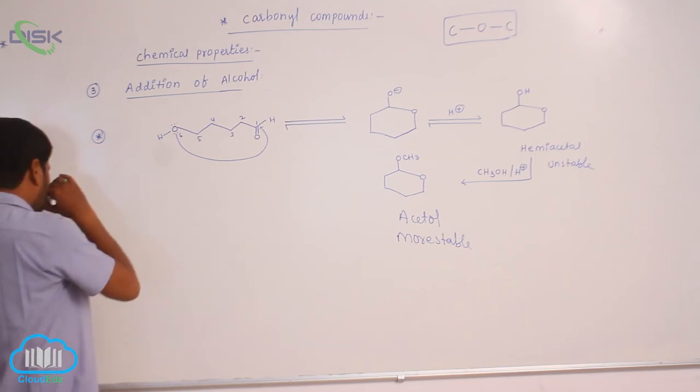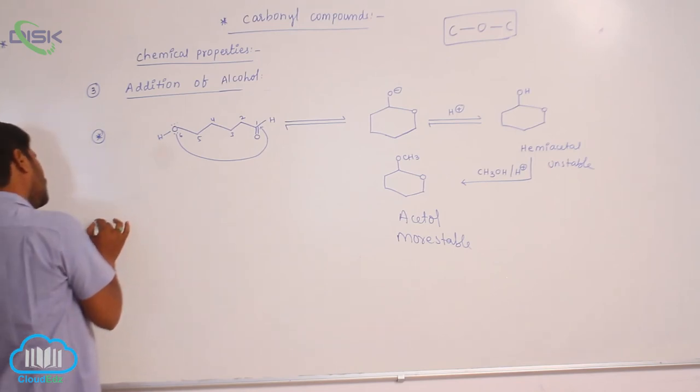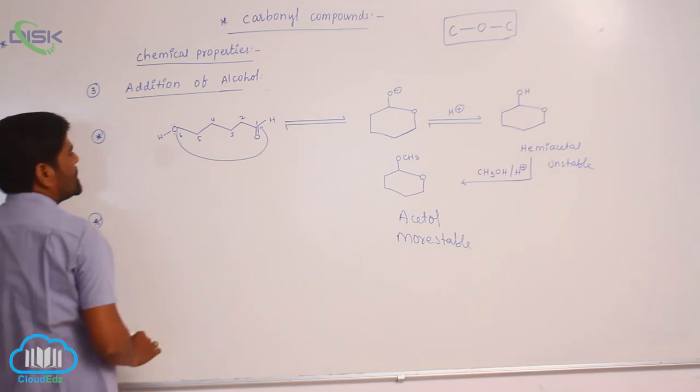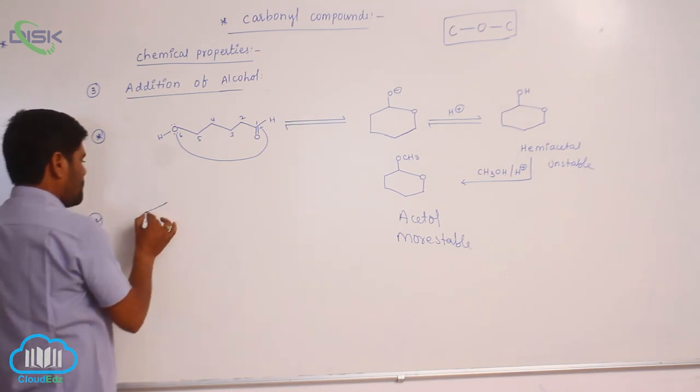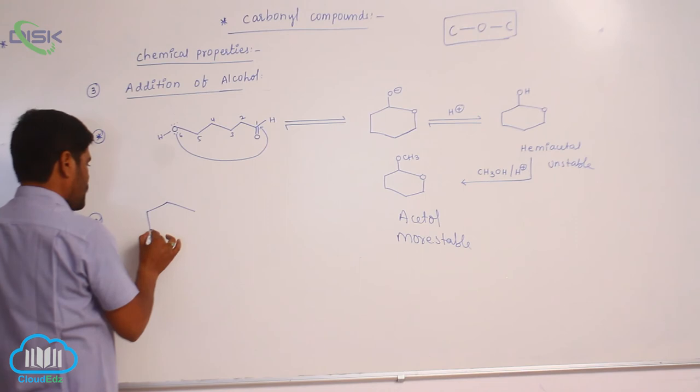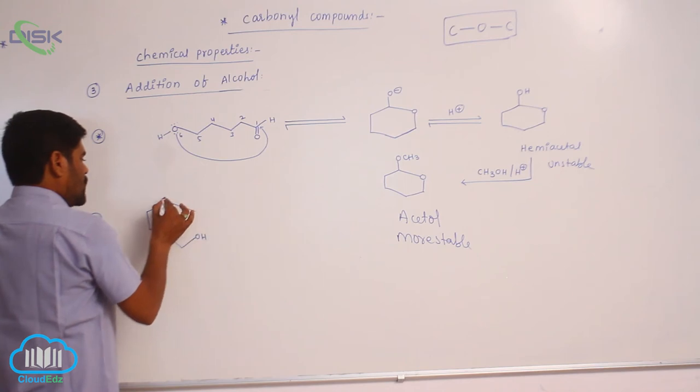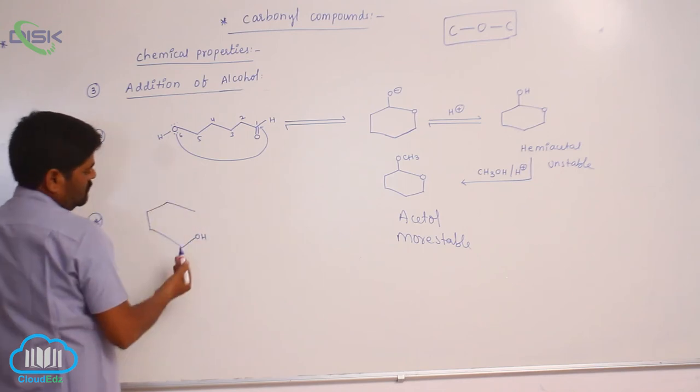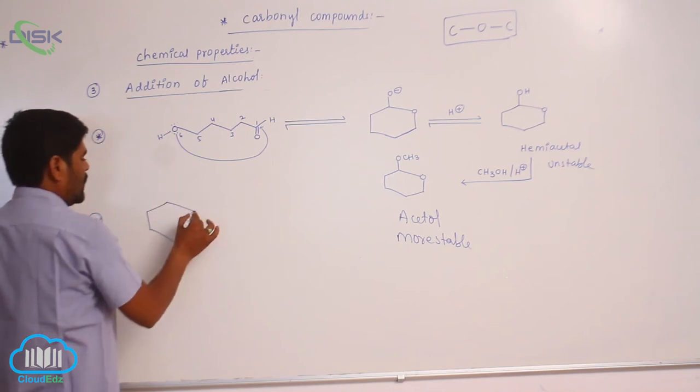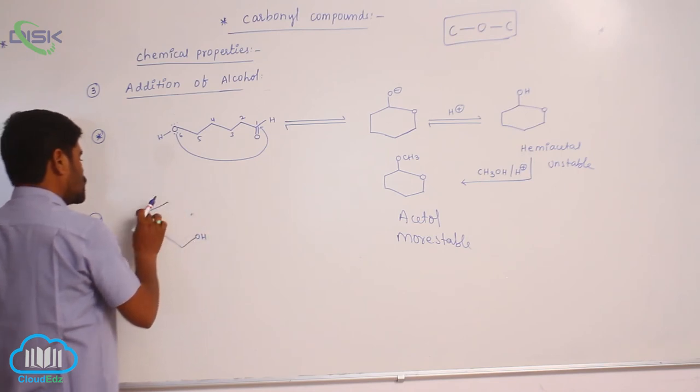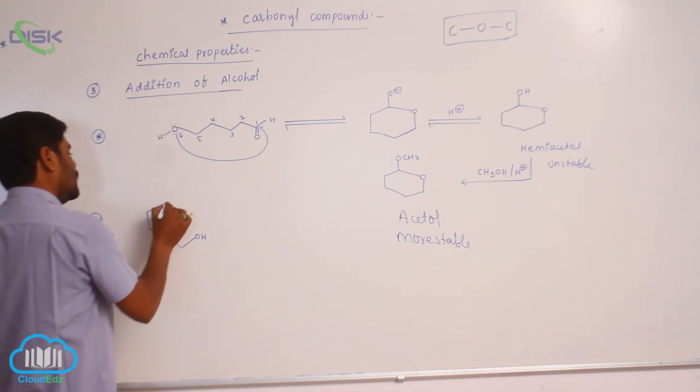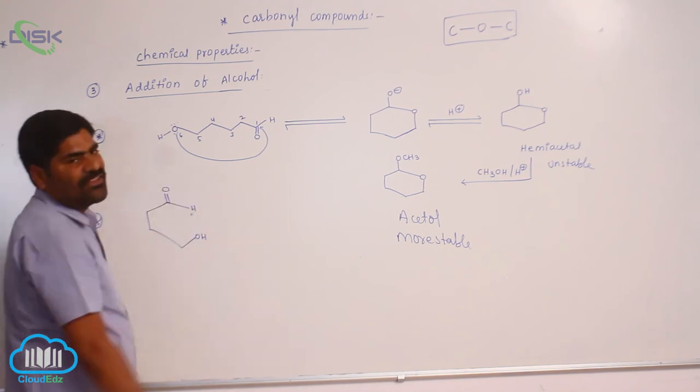If you go for the second example of these, here is OH 1, 2, 3, 4, 5. So, directly I am taking here, 1, 2, 3, 4, 5, right, if it is like this.